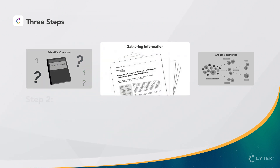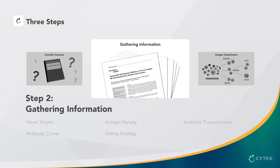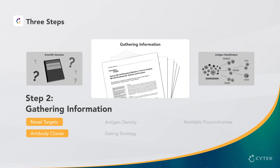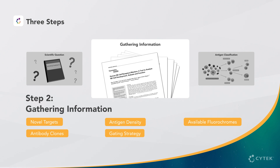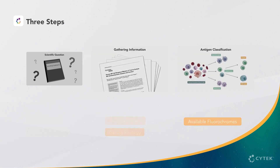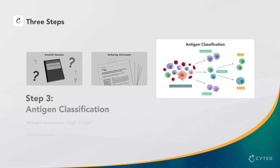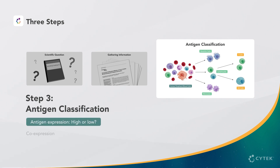Second, you should gather additional detailed information, such as novel targets that should be added to the panel, preferred antibody clones, predicted antigen density, gating strategy, and available fluorochromes. Finally, you will apply this knowledge to understand and classify your antigens based on expression and co-expression.